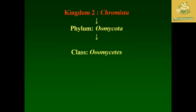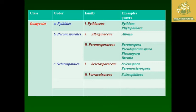After that we are going to see about the kingdom Chromista, which comes under the phylum Oomycota and the class Oomycetes. In Oomycetes there are three different orders: Peronosporales, Pythiales, and Sclerosporales. It has different families which we can see one by one.